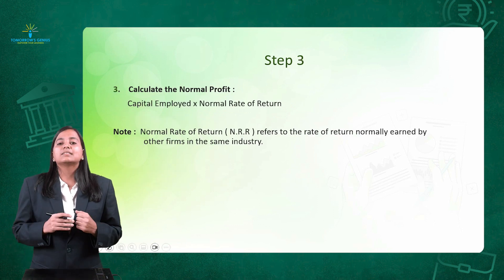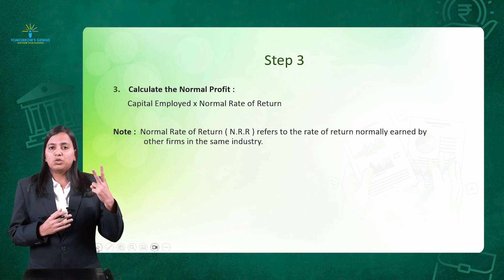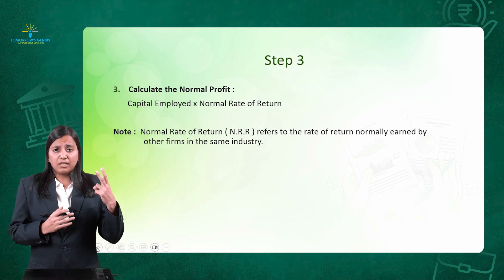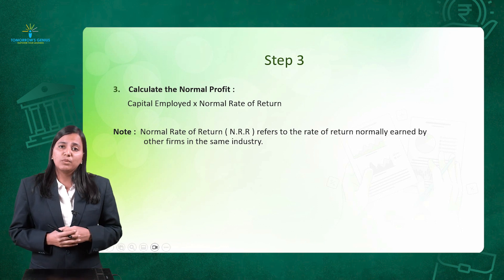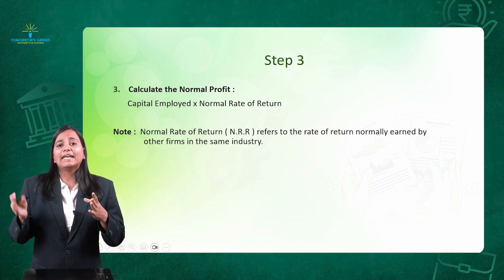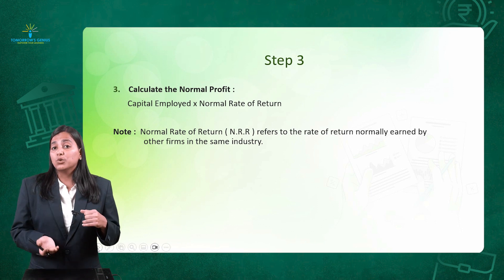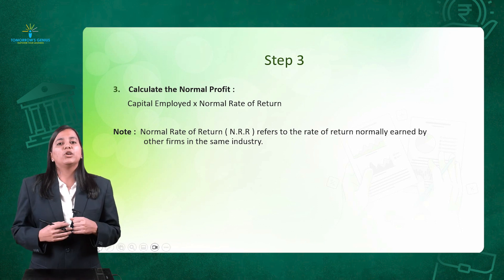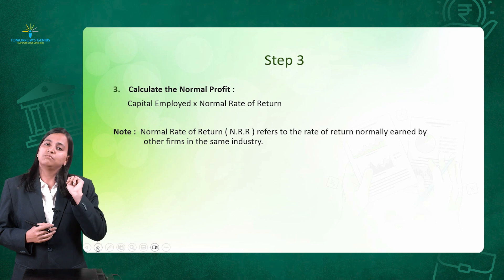Step number 3 is calculation of normal profit. Normal profit is given by the formula: capital employed multiplied by NRR. NRR will be given in the question, and capital employed we have calculated in step number 2.